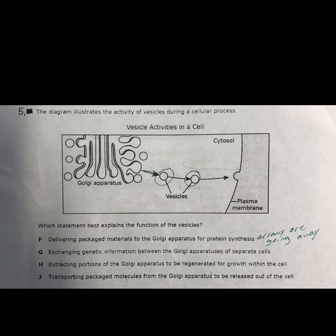Question number five is the question I thought was going to trip y'all up, but y'all showed me something. Y'all took the time, analyzed it, went through it, and saw the vessels leaving the cell. You didn't get tripped up by the Golgi apparatus, the plasma membrane, or the word 'cytosol,' which you'd never seen. You guys actually took the time and read this question. B is the correct answer for this question, and a lot of you got it right. This shows me that you guys are starting to pick up how and why I'm teaching you the way I am. Great job.